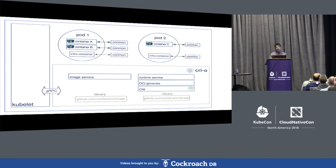Conmon is also responsible for handling attach, exec, and OOM events. Because you see many Conmon processes running, for efficiency we wrote Conmon in C with shared libraries, so your memory usage overall — even spawning hundreds of containers — shouldn't be a lot.